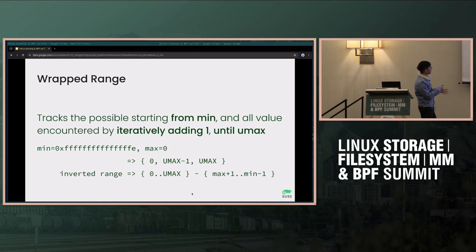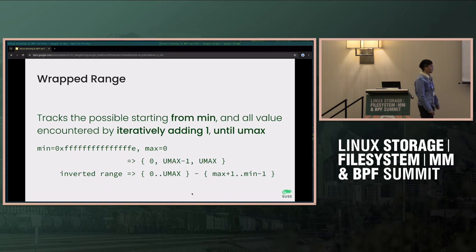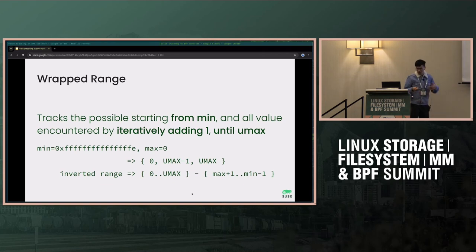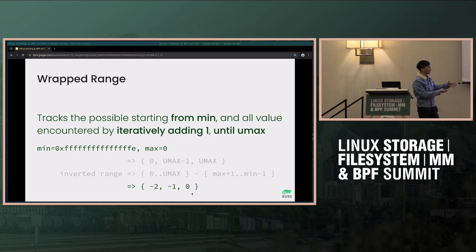Say if you have the minimum as u_max minus 1 and max as 0, then iteratively counting: u_max minus 1, then plus 1 gives u_max, then plus 1 gives 0. That is now a valid range we track. Another way to look at it: it's an inverted range — you start from the full set zero to u_max and subtract the numbers between 1 and u_max minus 2. If we allow this, the unsigned range actually stores a perfectly valid signed range.